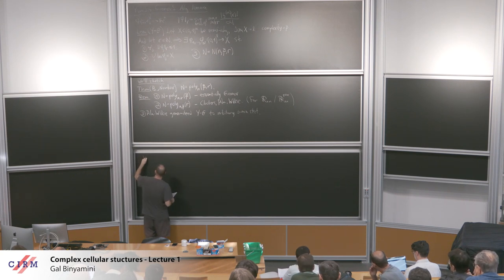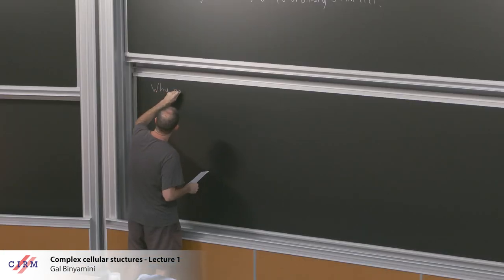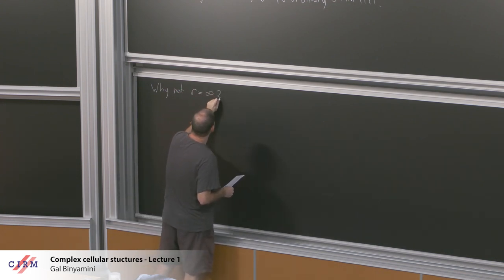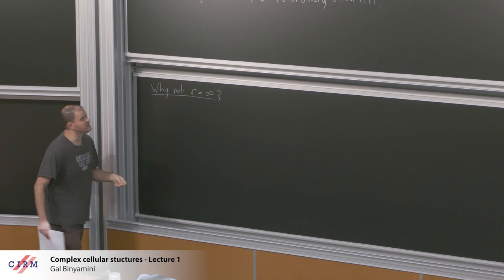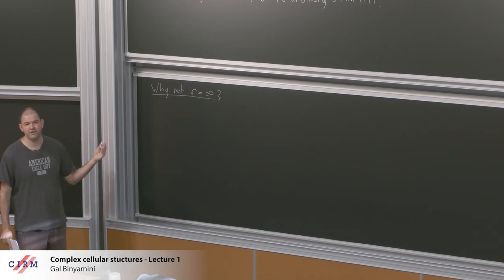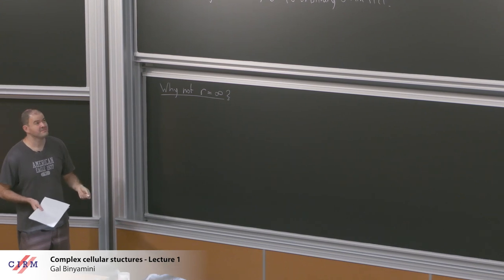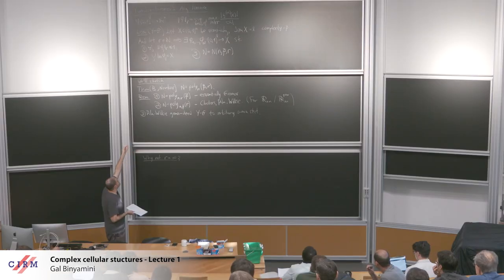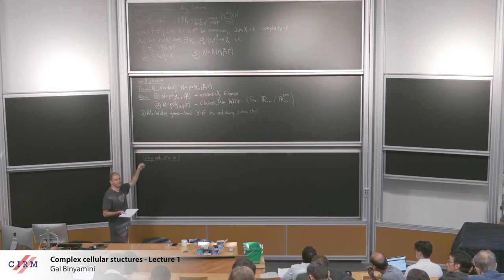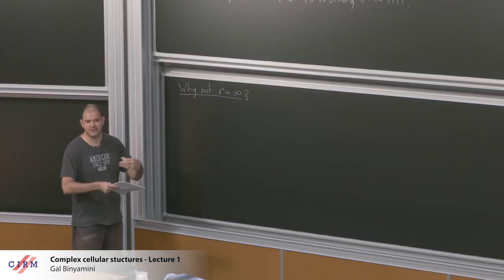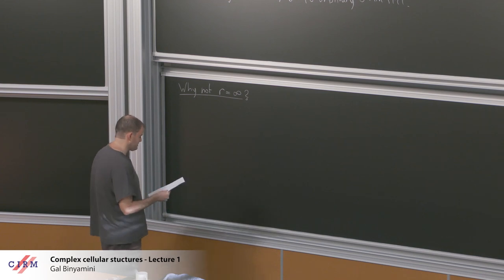The question is why not R = ∞. If we could prove it for R = ∞, then we wouldn't have to worry about how things depend on R, and Gromov's result would already give polynomial dependence on β. But in fact you cannot do R = ∞, and this takes us in the direction of the complex cell stuff.